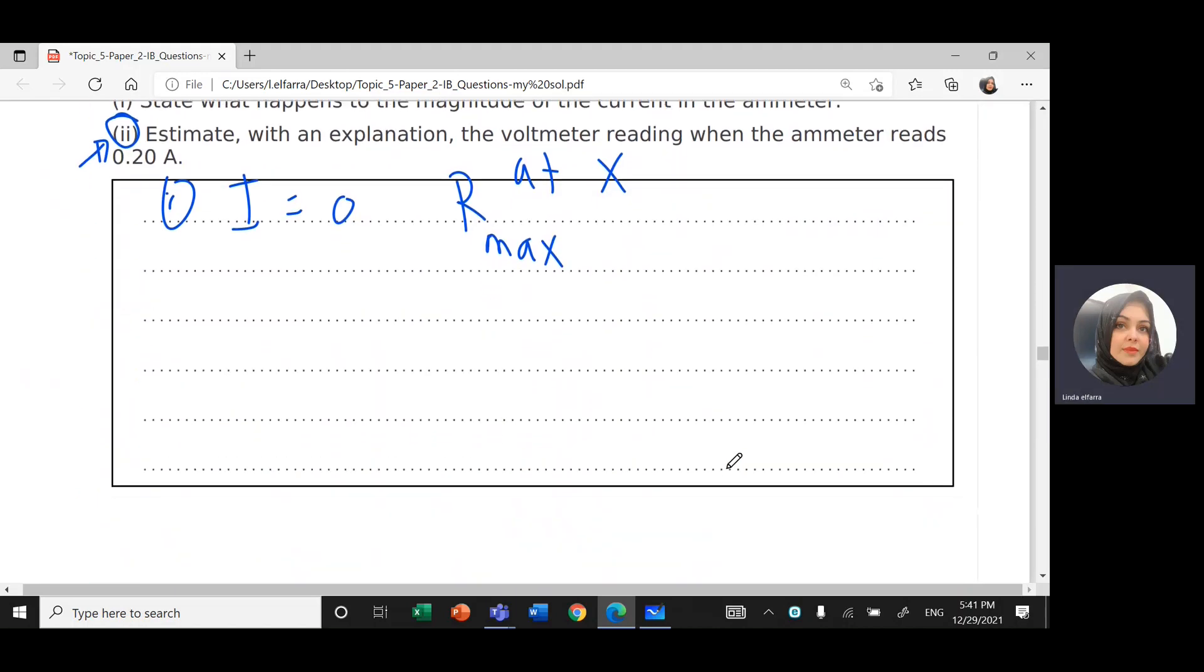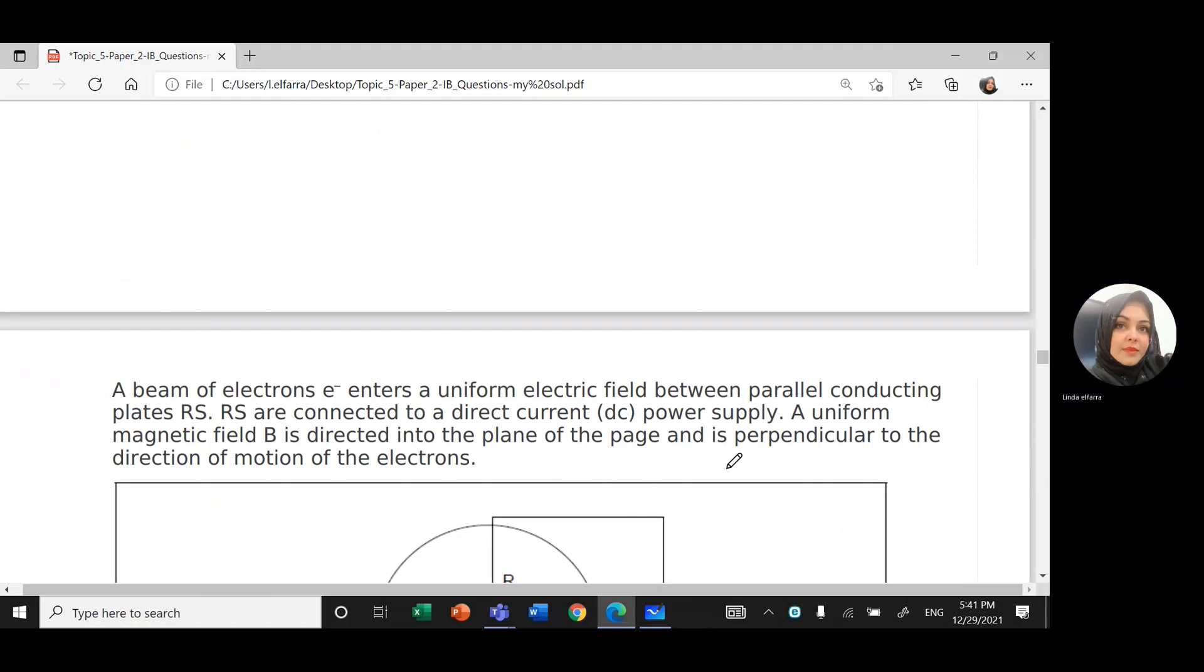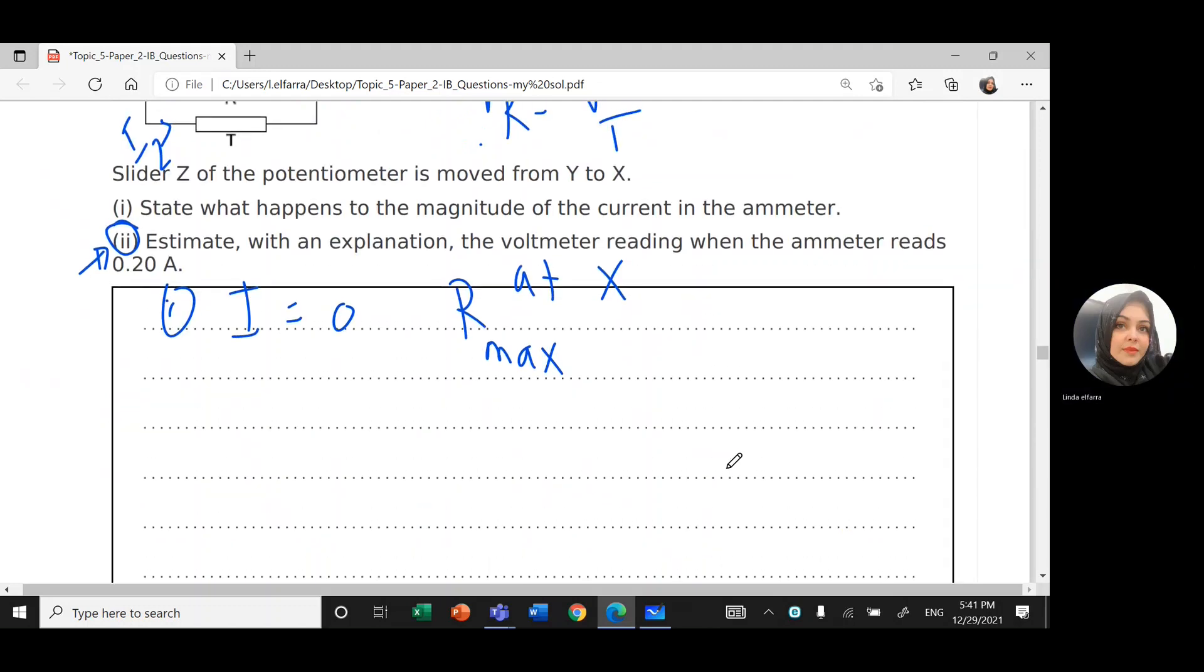So what is the values of the current? So the current, this is how we're going to do it. So I will equal I1 plus I2, 0.14 plus 0.06. It will give me 0.2, the total current.